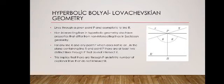Non-intersecting lines in hyperbolic geometry also have properties that differ from non-intersecting lines in Euclidean geometry. For any line R and any point P which does not lie on, in the plane containing line R and point P, there are at least two distinct lines through P that do not intersect R. This implies that there are through P an infinite number of coplanar lines that do not intersect R — walang katapusan o walang hanggang number na do not intersect R.